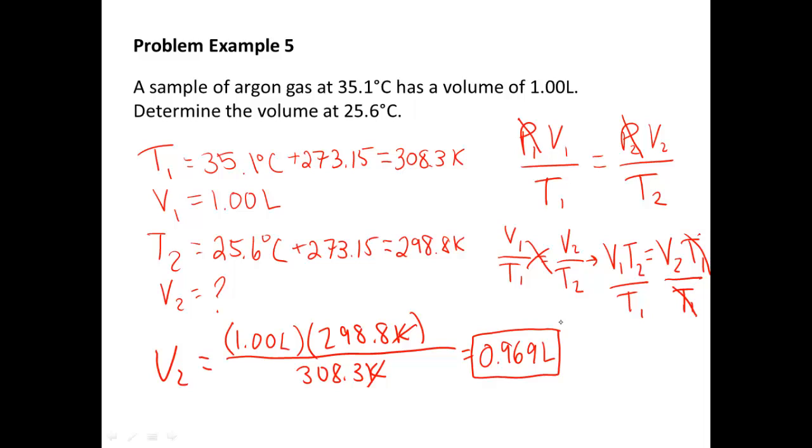Now, does that make sense? Our temperature goes down. That means that our particles are moving a little bit slower. They're not going to take up quite as much room. So, we should get a lower volume which we did get a smaller volume. So, that makes sense. So, in our next video, we're going to mix up the ideal equation just a little bit more. And I will see you in that video. Thank you.